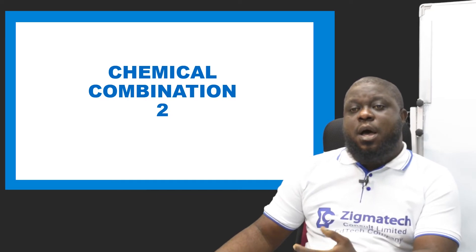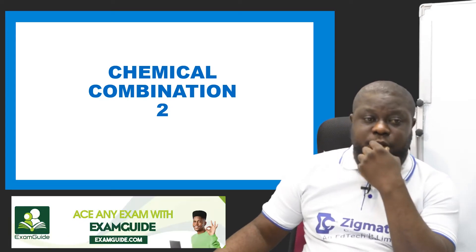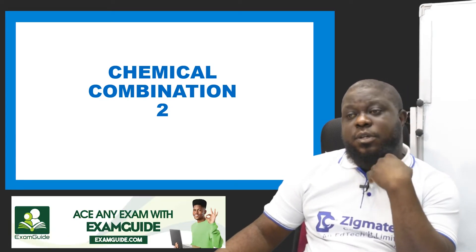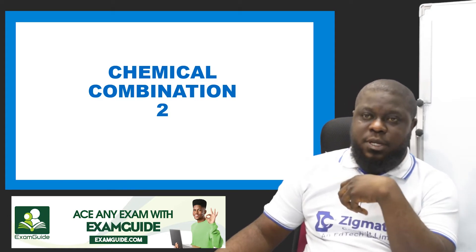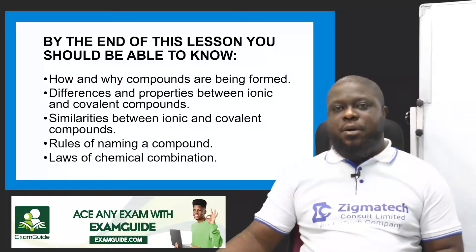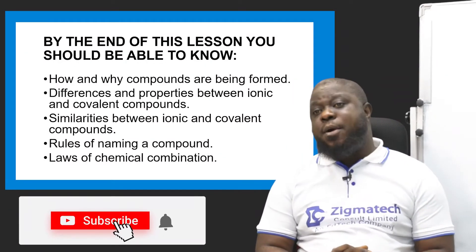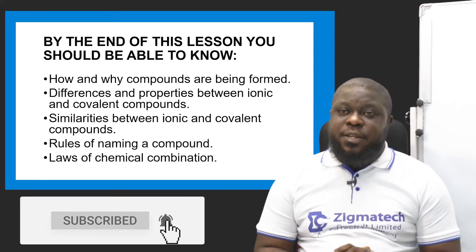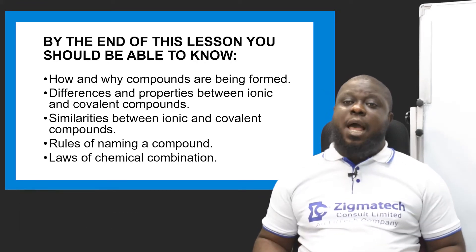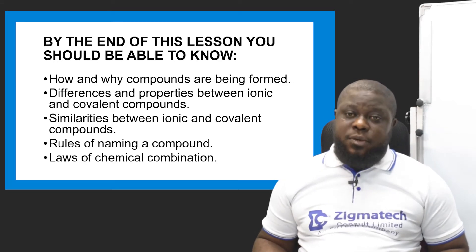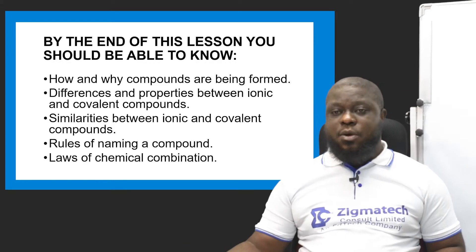Now, I already told you that chemical combination has been achieved because it is used in providing us a compound. By the end of this lesson, you should be able to know how and why compounds are being formed, differences and properties between ionic and covalent bonds, similarities between ionic and covalent compounds, rules of naming a compound, and laws of chemical combination.